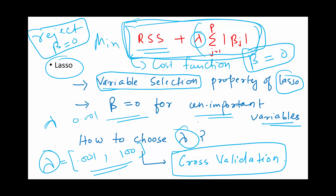It is a slightly computationally intensive process because for each lambda value you will have a separate optimization happening. But finally, you will get the model which has the tuning parameter giving you the best model, and that is done through cross-validation. It is good to do this with test data, not with training data — you get results automatically for the test data, but you have to replicate that with the test data.